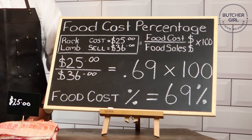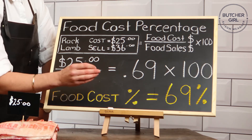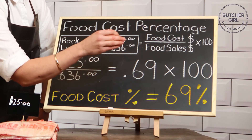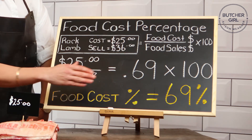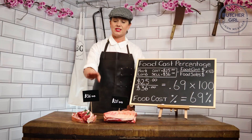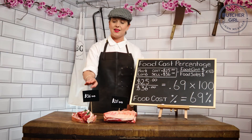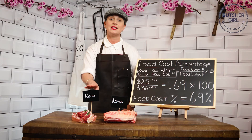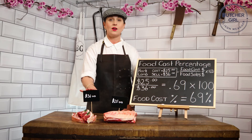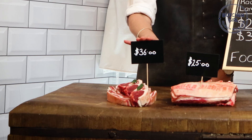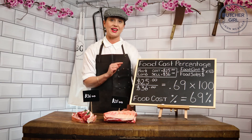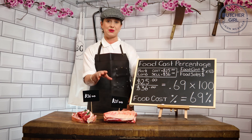This gives our food cost percentage of 69%. This tells us that the $36 I have placed on this rack of lamb, 69% of that goes into my food cost.